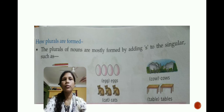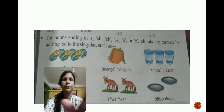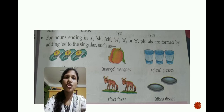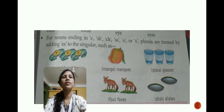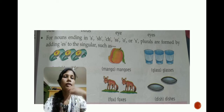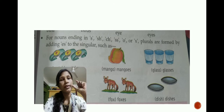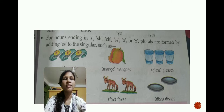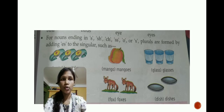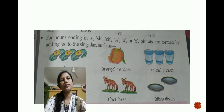Now there are more rules of making plurals. Rule number two: for nouns ending in S, SH, CH, SS, O, or X — plurals are formed by adding 'ES' to the singular. Whenever a word ends in these letters, we use 'ES' to make the plural form.